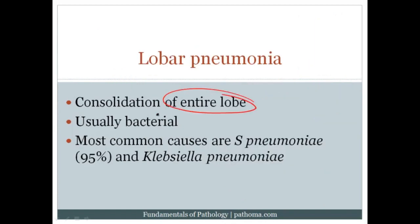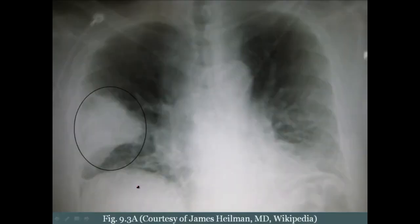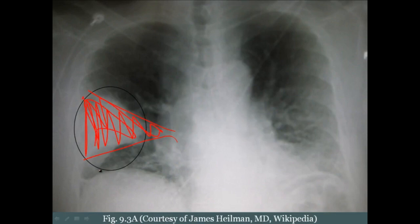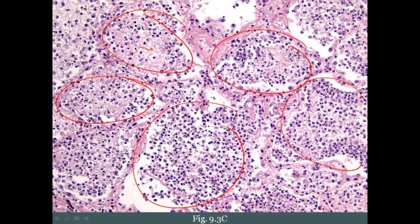Lobar pneumonia is consolidation of an entire lobe, usually bacterial. The two most common causes are Streptococcus pneumoniae, representing about 95% of lobar pneumonia, and Klebsiella. On microscopy, the alveolar air sacs are full of neutrophils along with pink frothy exudate. If this is present within all the air sacs of a lobe, you get wipeout of that lobe — hence lobar pneumonia.